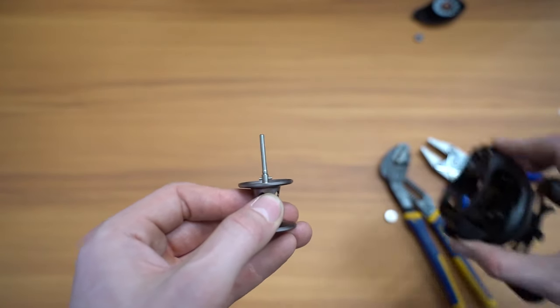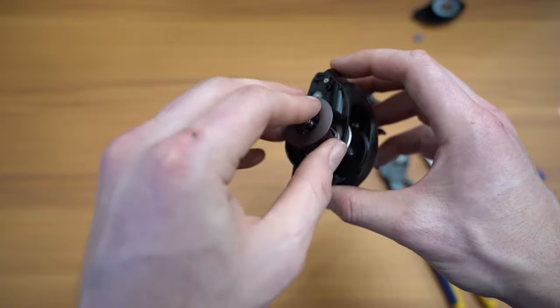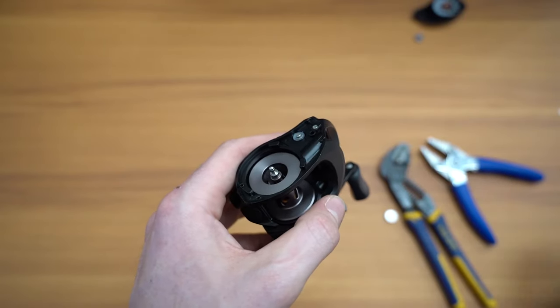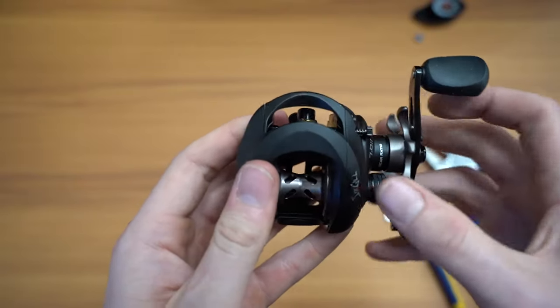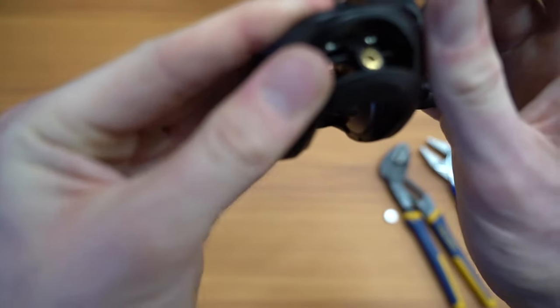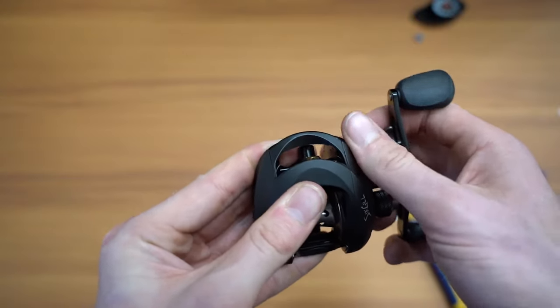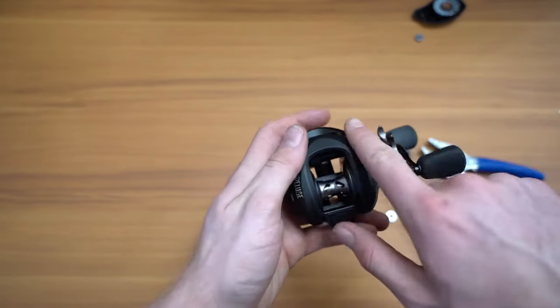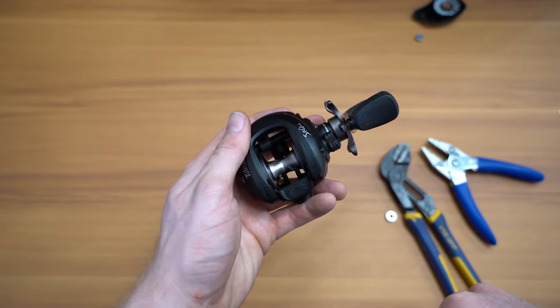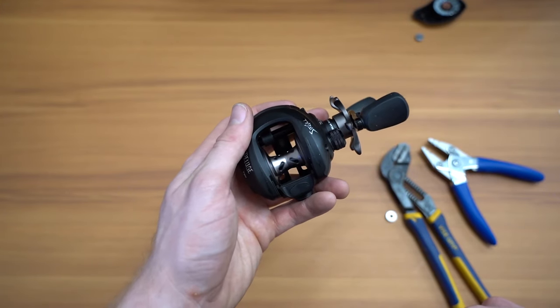So we're going to go ahead and grab the body of the reel. We're going to just put that back inside. We're going to grab the side plate and rotate it up. Make sure it's all lined up. We're going to get that thumb and push it forward. Perfect.